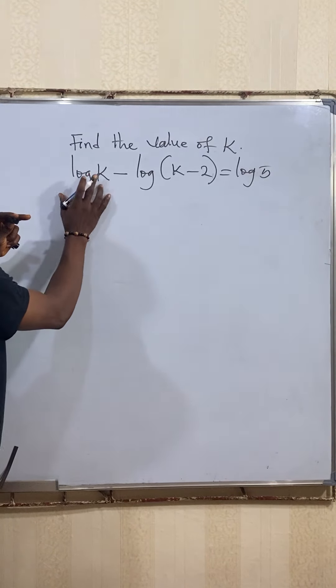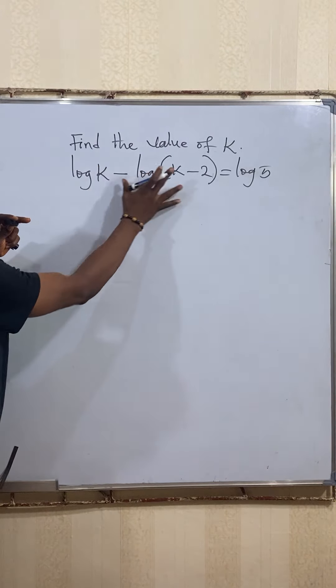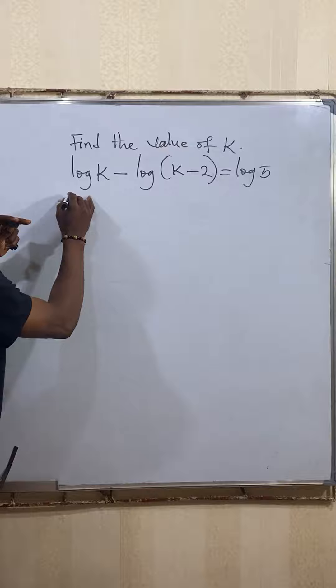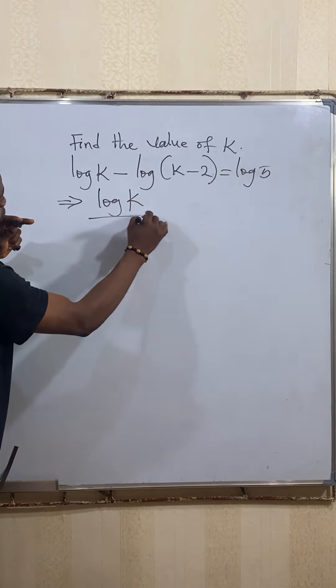The subtraction law says we'll have something like this: we divide this side by this. So this now implies log k divided by log open bracket k minus 2 to be equal to log 5.